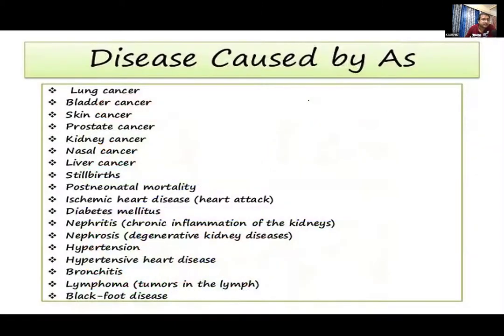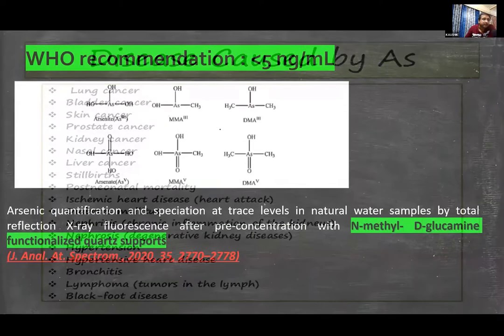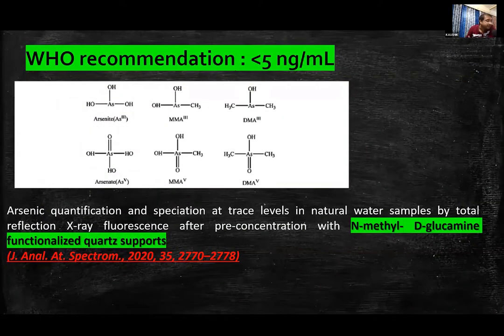These are the diseases that can be caused by excess arsenic intake through drinking water. To avoid this, it is of utmost importance to do speciation and determination of arsenic at ultratrace levels. The WHO has recommended that arsenic in drinking water should be less than 5 ppb, so we need to develop speciation methods for arsenic that work at such low concentration levels.